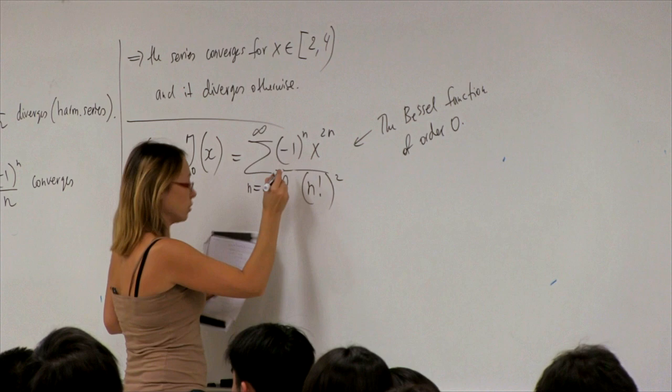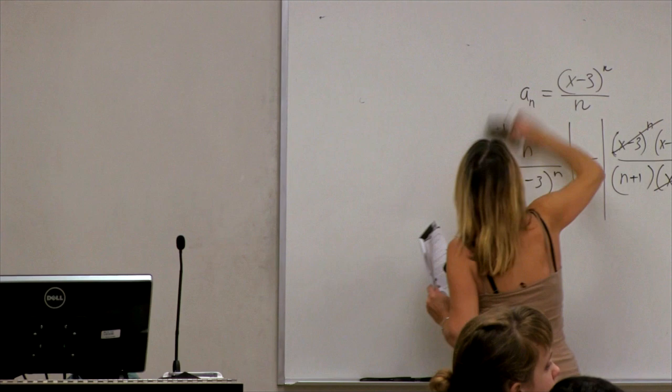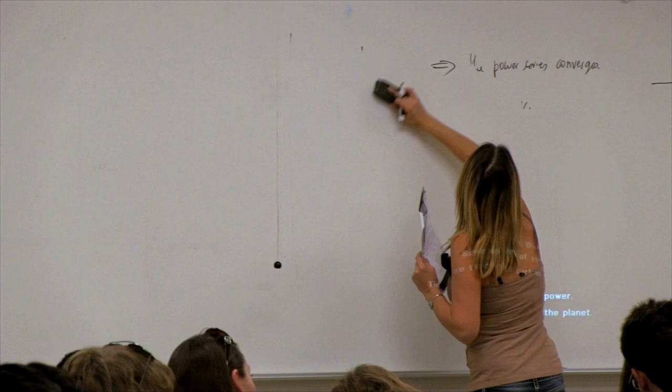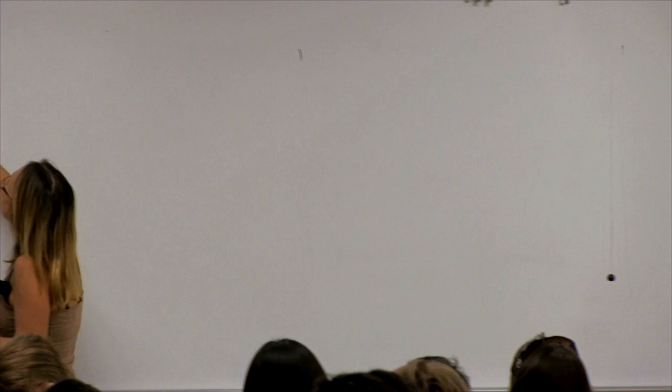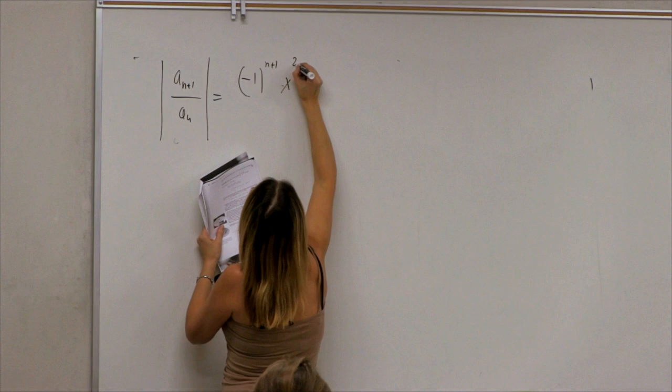We first investigate its properties. We're going to use the ratio test to find the values of x for which this function converges. So we look at |aₙ₊₁/aₙ|.